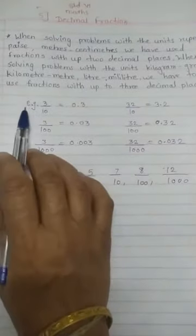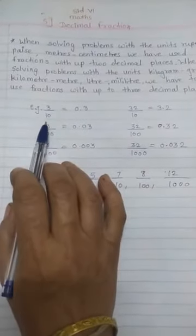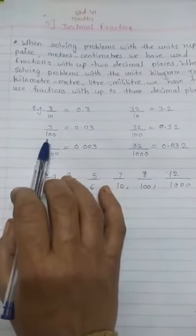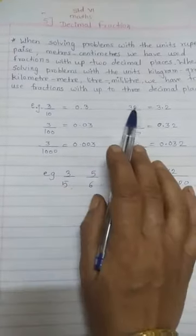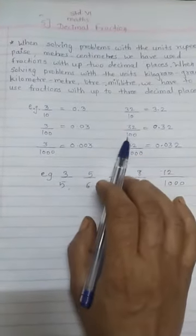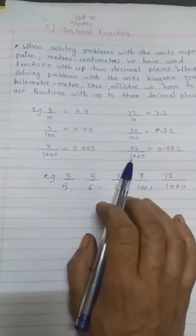Here I take one example. Again see 3 by 10, 3 by 100, 3 upon 1000, 32 upon 10, 32 upon 100, 32 upon 1000. These are the decimal fractions.